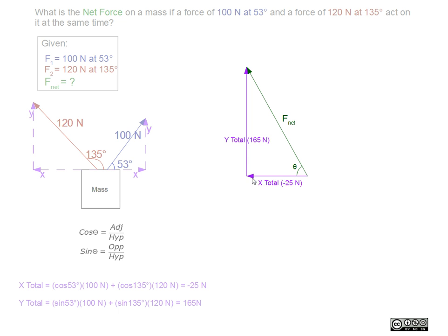Solving for x and y, we arrive at an x total of negative 25 newtons and a y total of 165 newtons. We draw the vectors tip to tail and draw the resultant, which is going to be our net force.